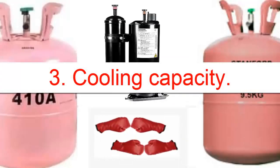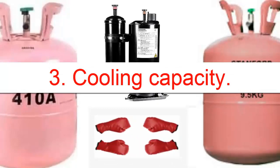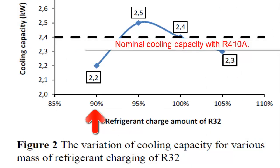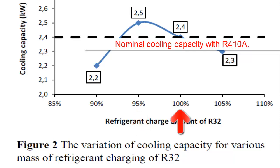3. Cooling Capacity. The cooling capacity provided by the compressor will also be affected by the change from R410A to R32. For instance, as shown in the graph, at a 90% load in grams relative to the R410A charge, there will be a decrease in cooling capacity of around 10%. In the graph example, cooling capacity will drop from 2.4 kW to 2.2 kW. Similarly, at a 95% load, there will be an increase in cooling capacity of about 5%, but with higher electrical current consumption than nominal. At a 100% load, the same cooling capacity as the original equipment will be maintained, but with higher electrical current consumption than nominal. At a 105% load, there will be a decrease in cooling capacity of about 5%, but with higher electrical current consumption than nominal.